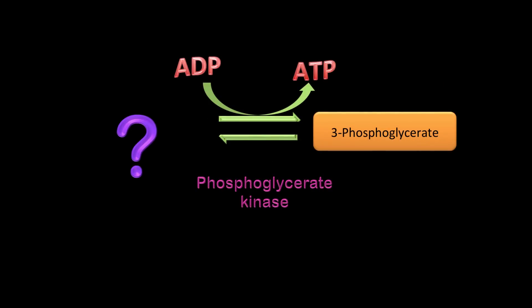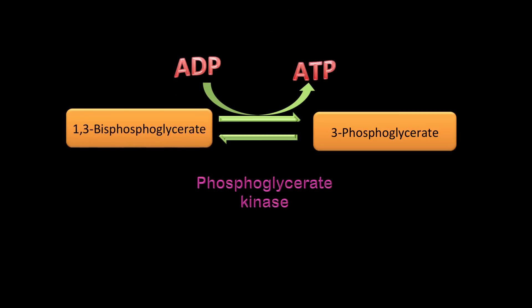Next reaction: three-phosphoglycerate is the product and phosphoglycerate kinase is the enzyme. What is the substrate? Correct — 1,3-bisphosphoglycerate. Remember, this is the reaction that breaks even in glycolysis, because this is one of the reactions where you form ATP. This is also an example of substrate-level phosphorylation.